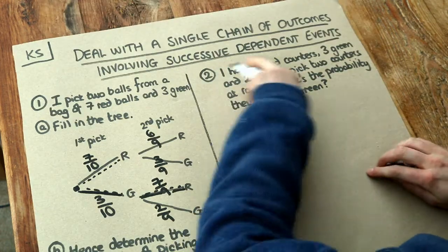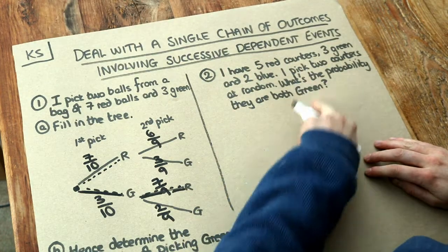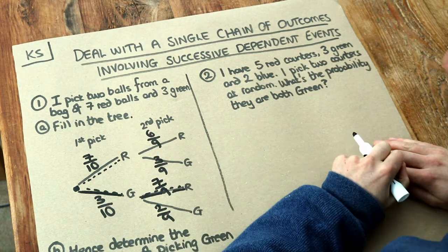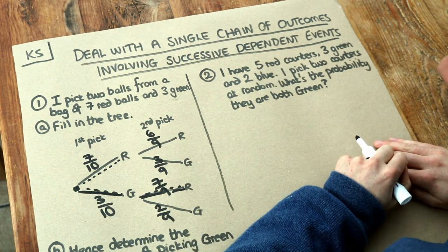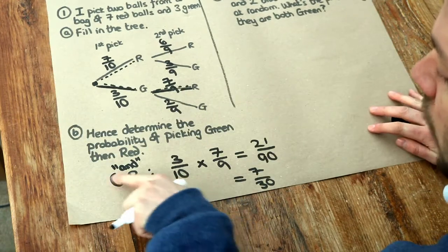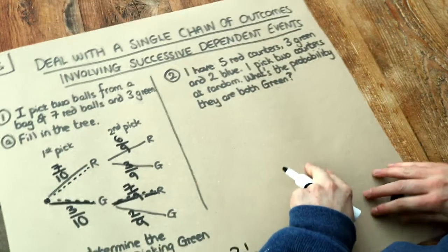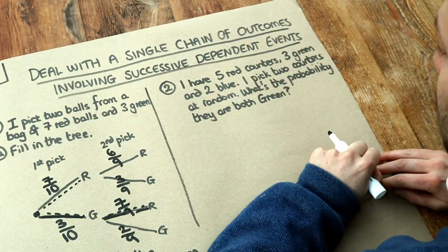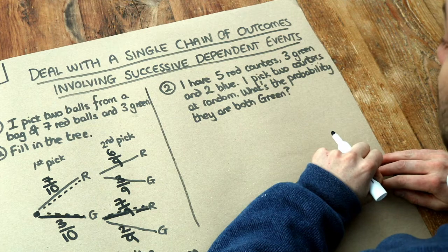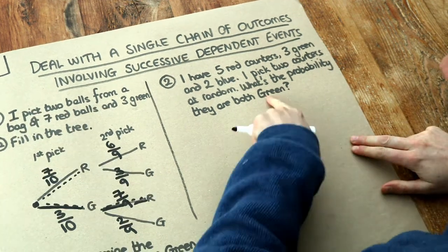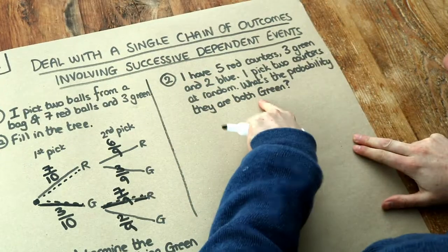This second question demonstrates that we can solve these kinds of questions without drawing a probability tree. I'm going to use the strategy of listing out outcomes that match. We've got five red counters, three green, two blue. I pick two counters at random. What's the probability that both are green?